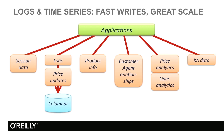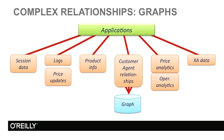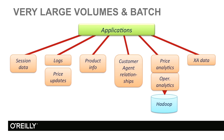We can also organize our data so that we have a product, and every price update can be stored in a separate column with the timestamp as the name of the column. Product information that can vary in its format can be best stored in a document database. Customer-agent relationships will benefit from being stored in a graph database, where we can explore the relationships between different parts. Dealing with large volumes of data, as in price and operational analytics, can be achieved with Hadoop and conventional MapReduce and batch jobs.